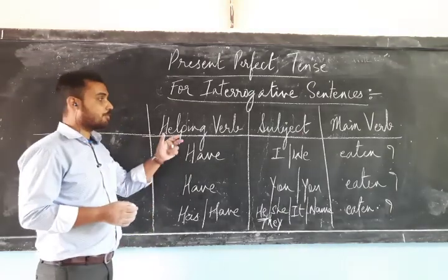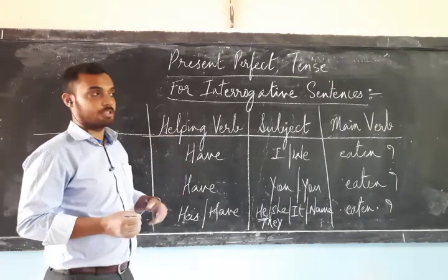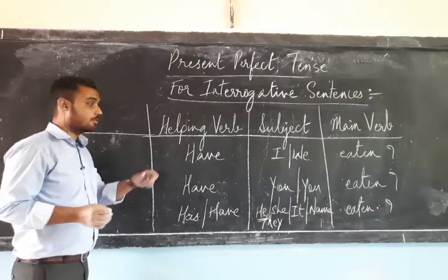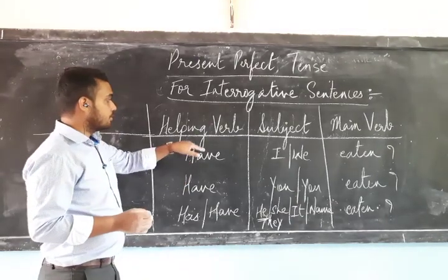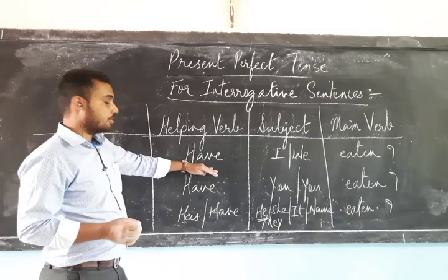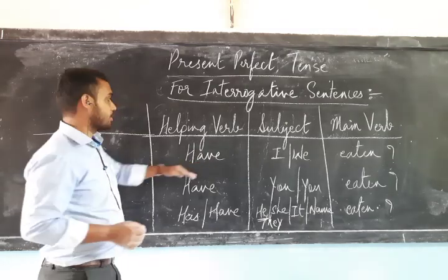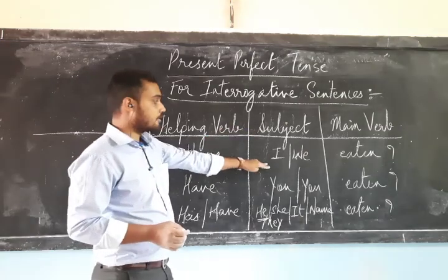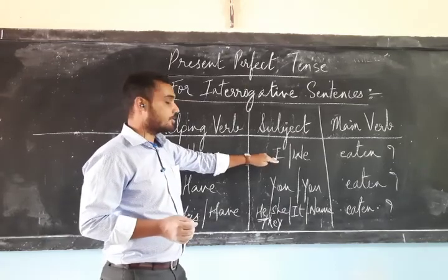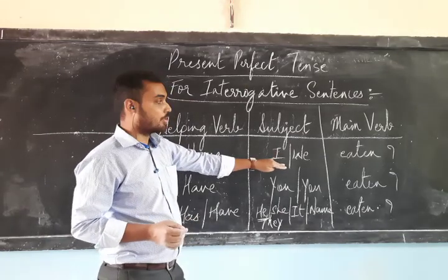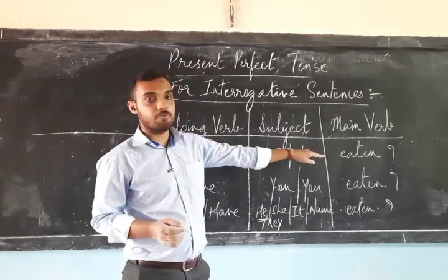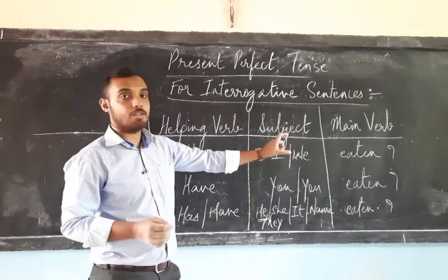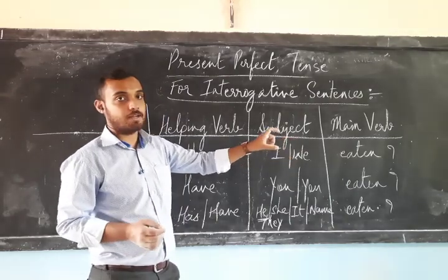So how do we form questions in present perfect tense? As discussed in class, the auxiliary verb is placed first, at the beginning of the sentence. Then comes the subject, which can be either singular or plural. Then the main verb, which must be in the past participle form, followed by a question mark at the end.